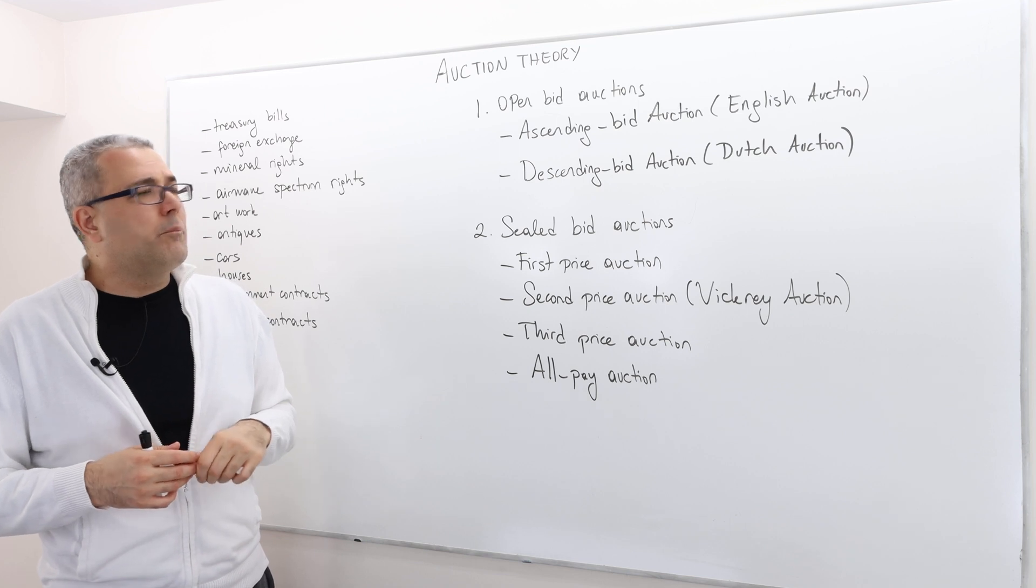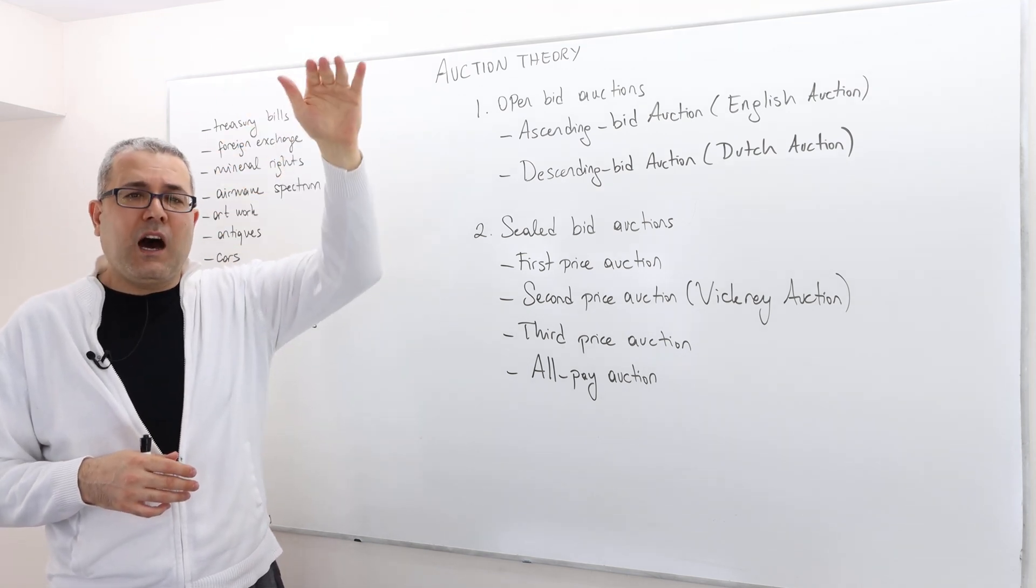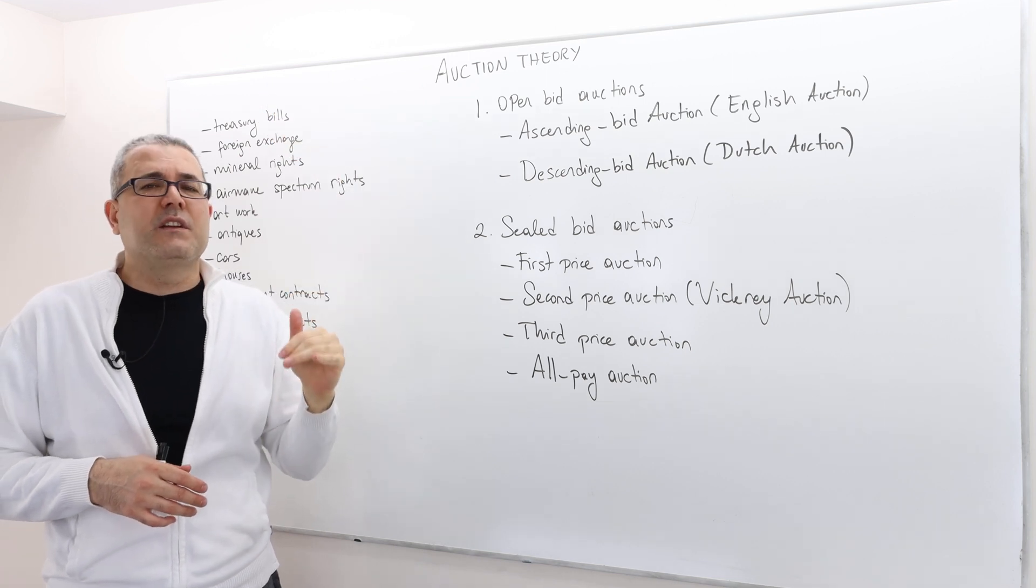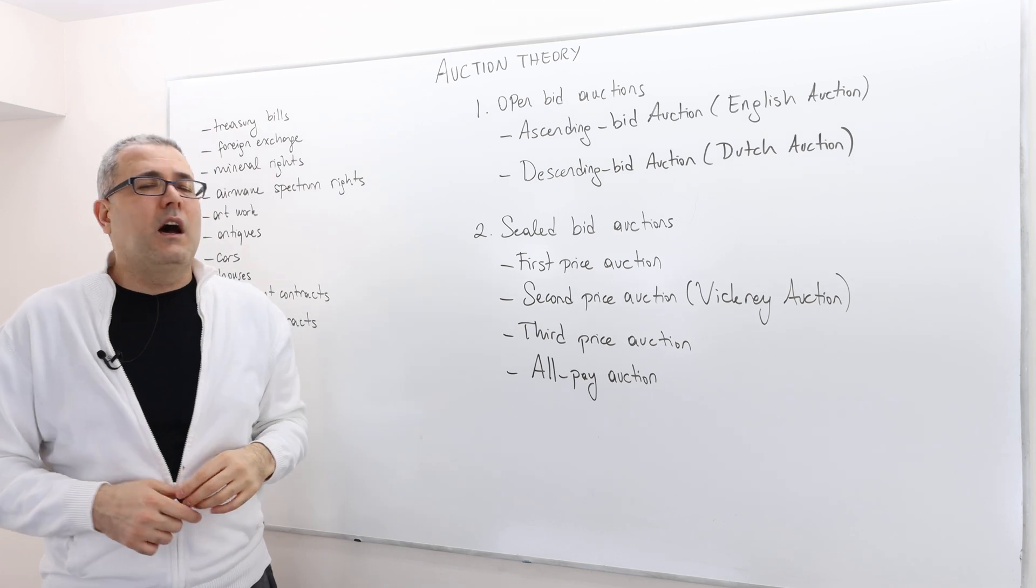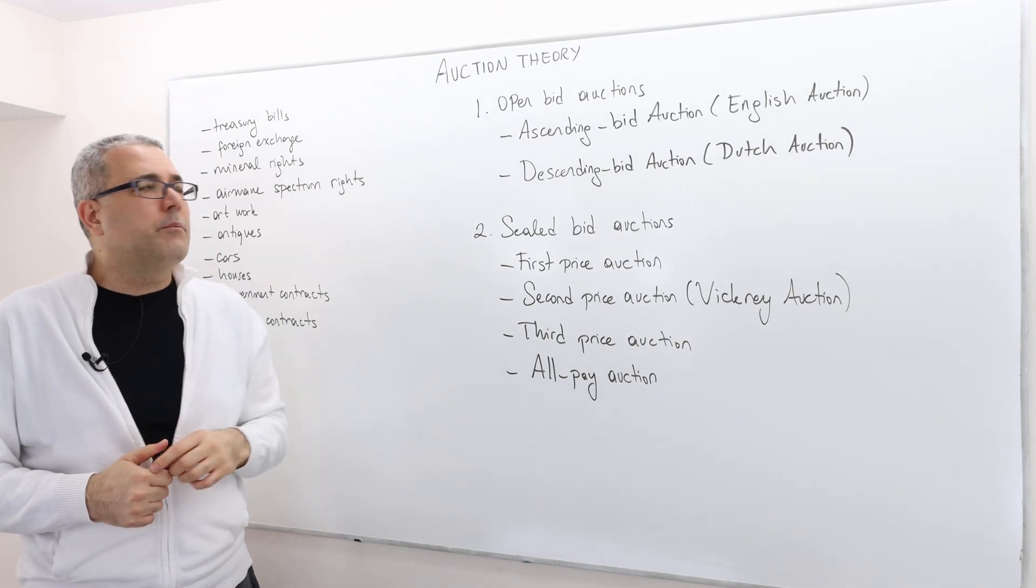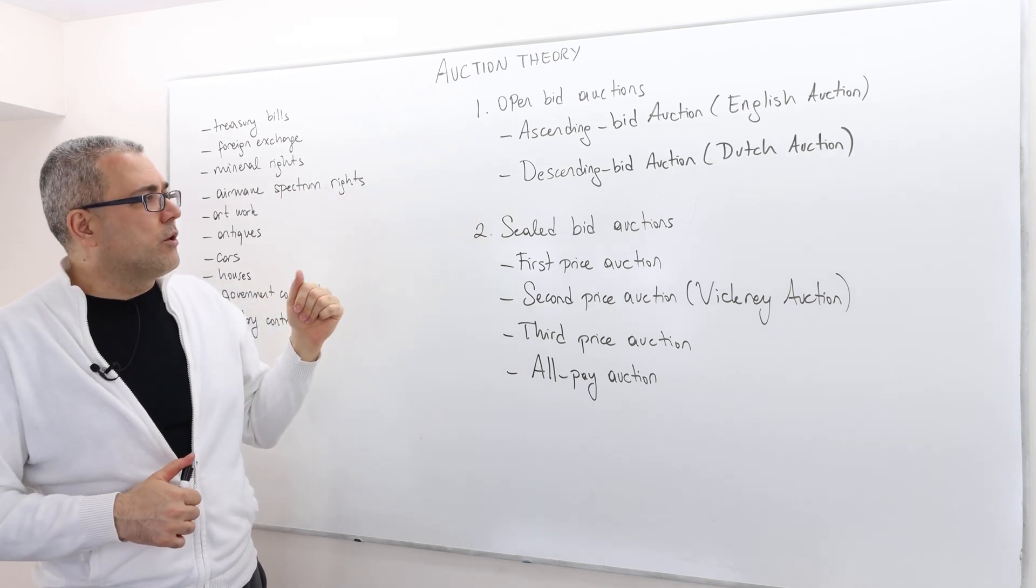In the descending bid auction, the price actually starts from a high level and then decreases. Whoever accepts the bid for the very first time wins the object and pays his bid. So it's called a Dutch auction.